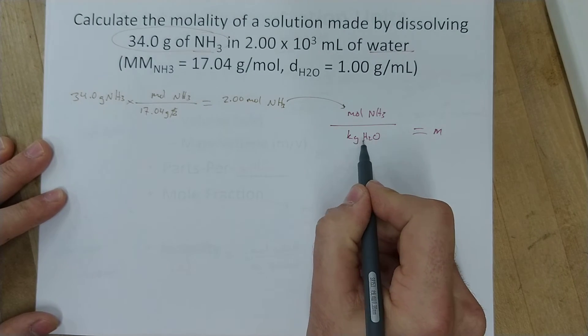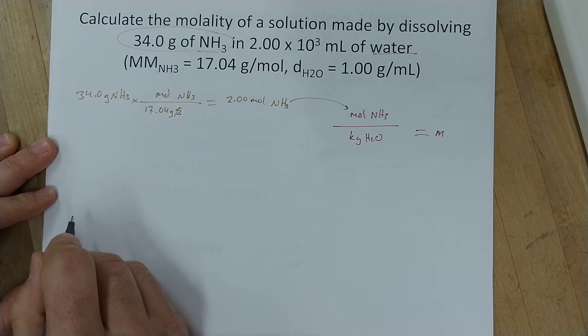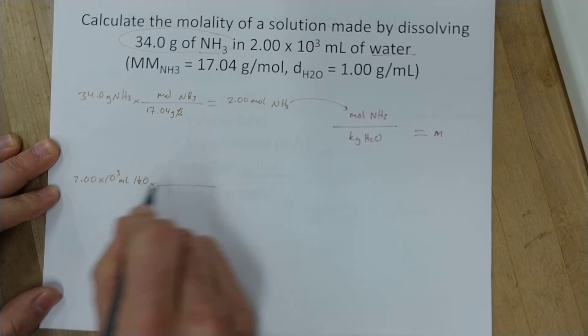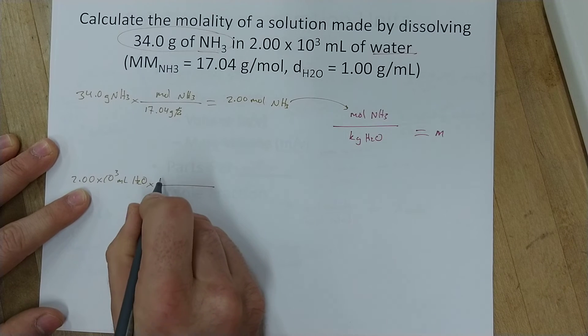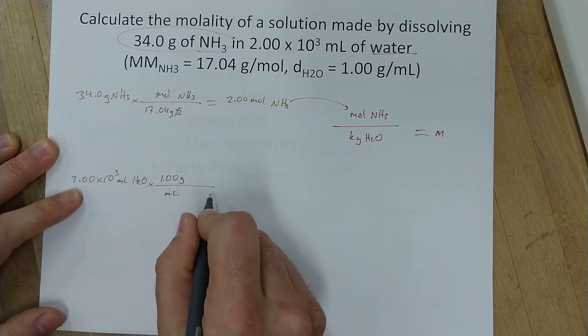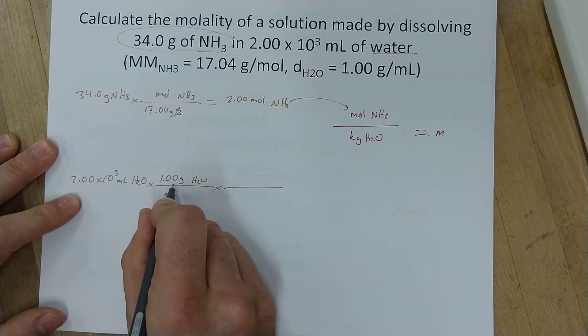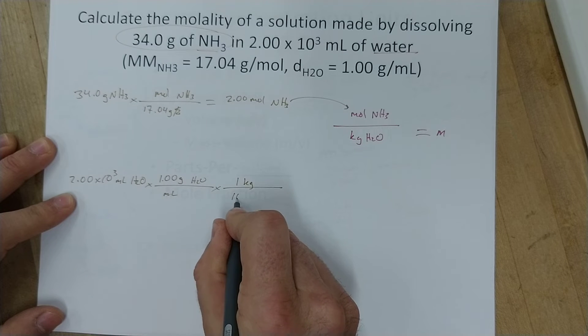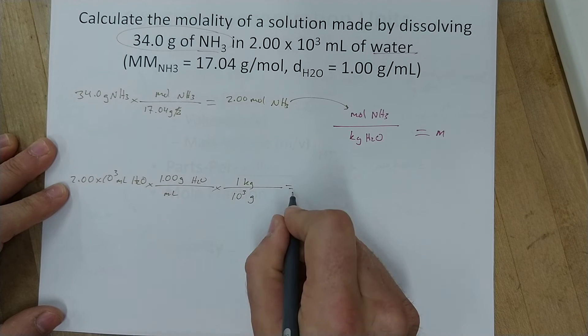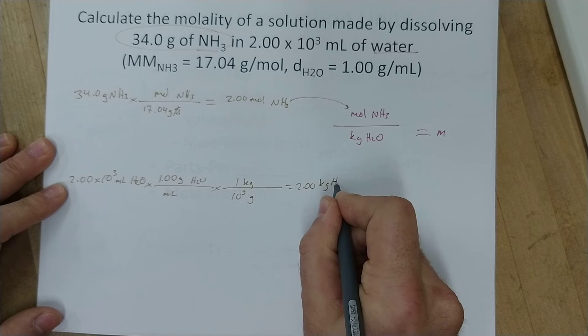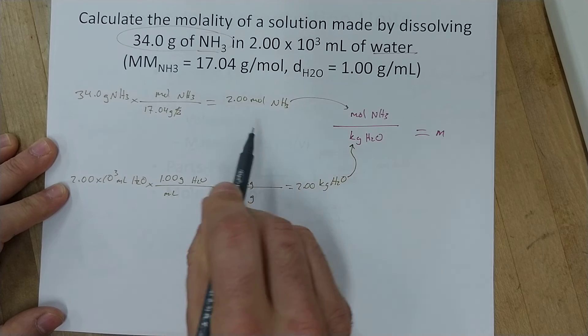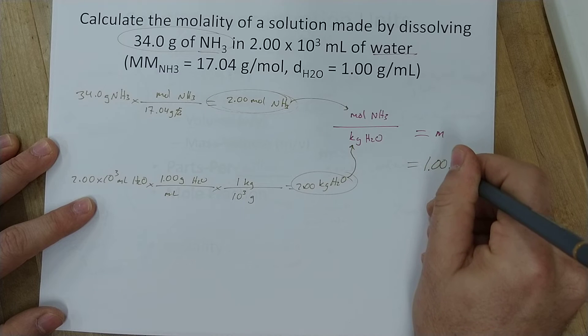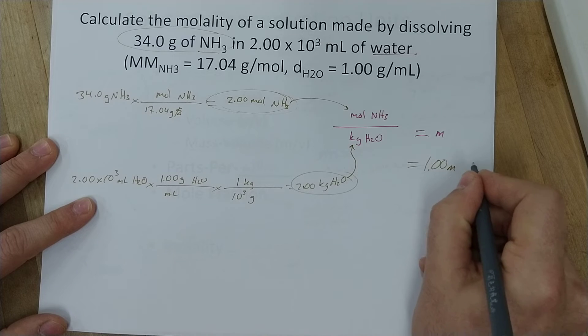Now I need to find the kilograms of water, and I know I have 2.00 times 10 to the third milliliters of water. So, to convert milliliters to a mass, I need to use that density. So water is 1.00 grams per milliliter for its density. And now I need to convert from grams to kilograms, which is 1 kilogram is 10 to the third power grams. So this is 2.00 kilograms of water, which I can then plug in there. Alright, so 2 moles of ammonia divided by 2 kilograms of water will be 1.00 molality solution of ammonia in water.